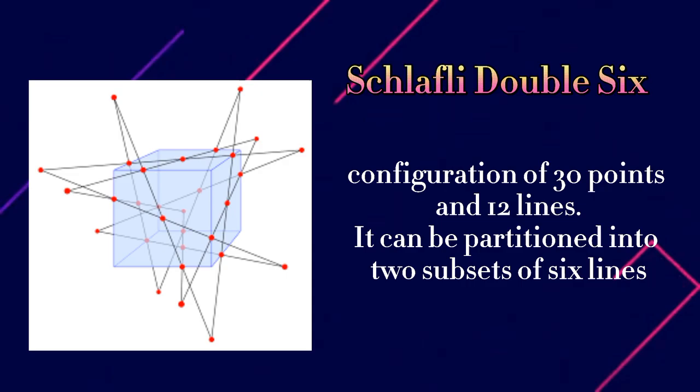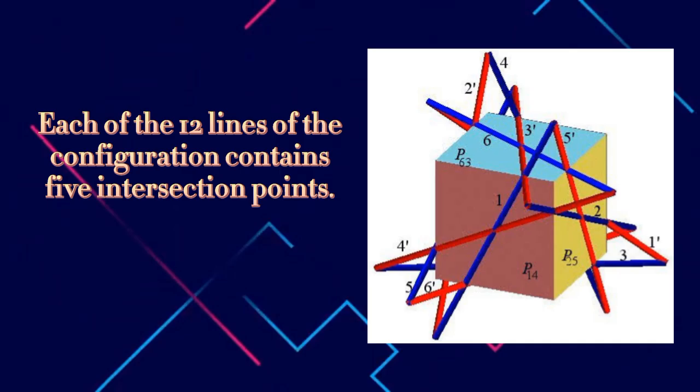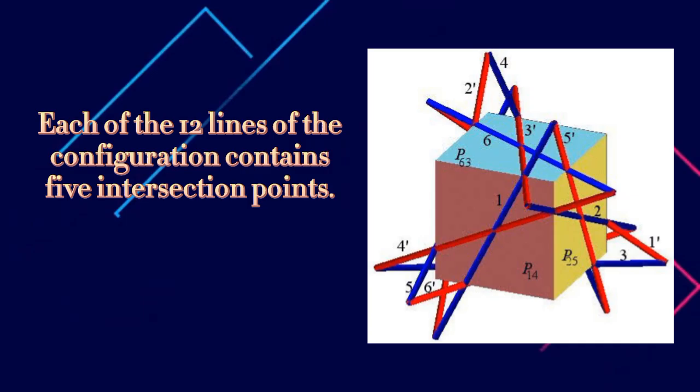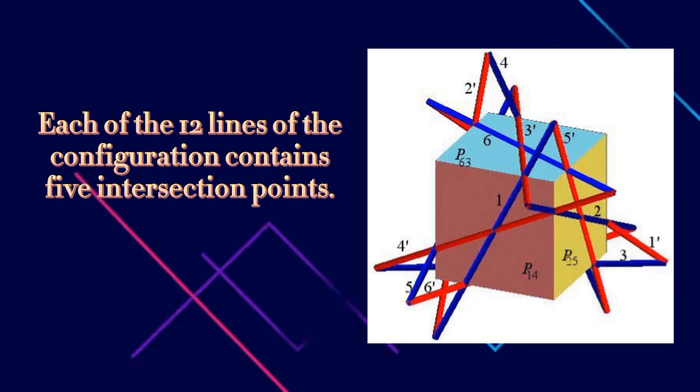Each of the 12 lines of the configuration contains five intersection points, and each of these 30 intersection points belongs to exactly two lines, one from each subset. So in the notation of configurations, the Schläfli double six is written 12₅ 30₂.